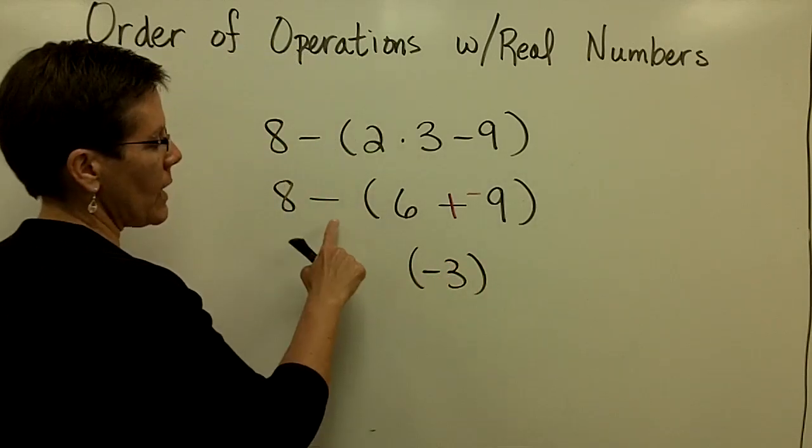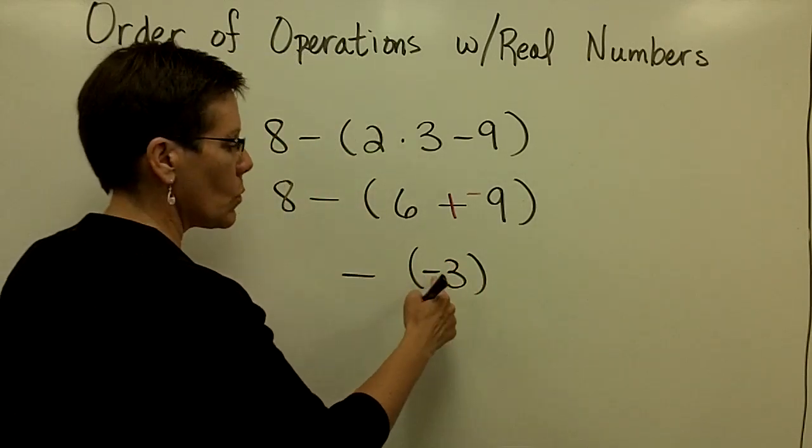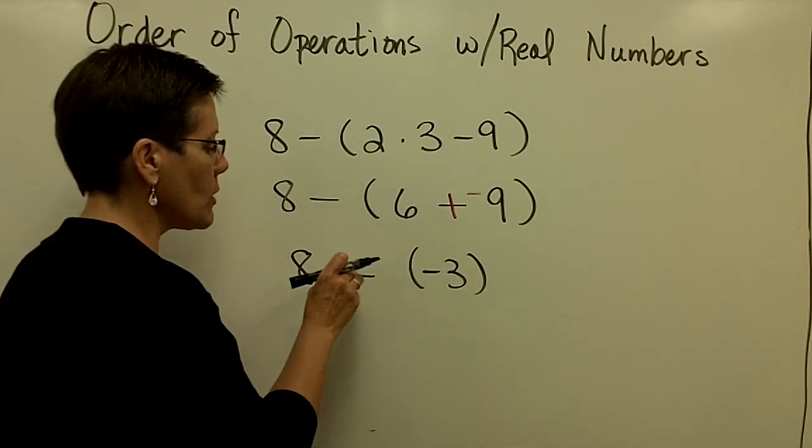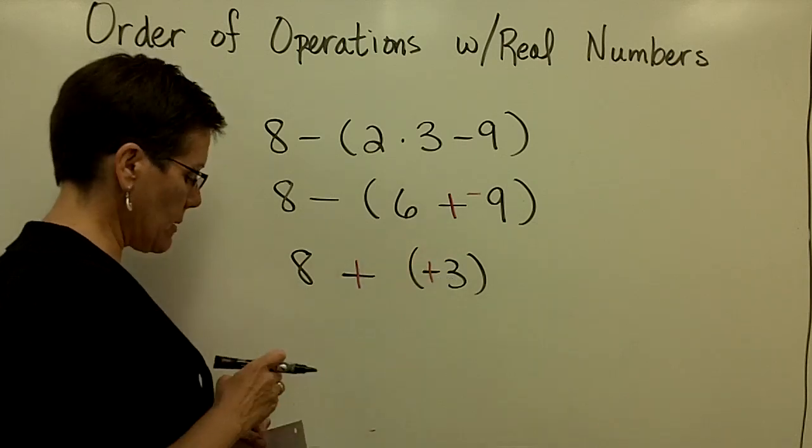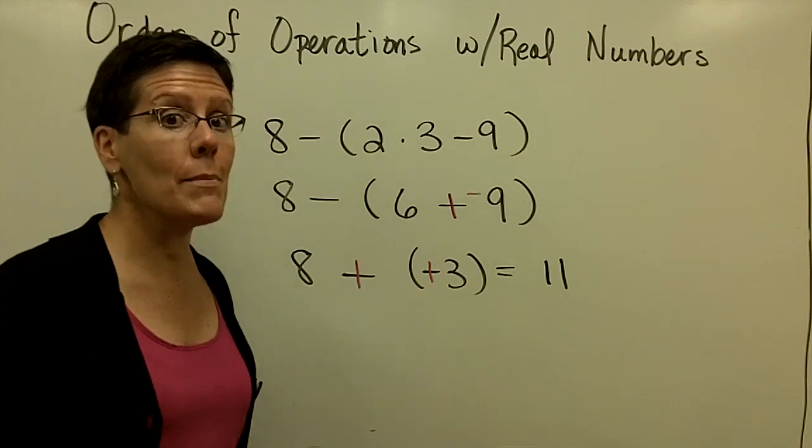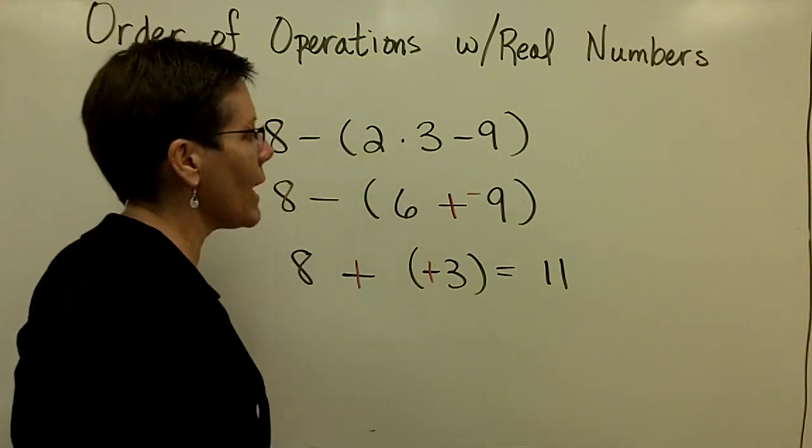I put parentheses around that because I want to subtract whatever's in that parentheses. And it's a little bit easier to look at. Subtracting a negative number means I add the opposite. And these have like signs, so I add their absolute values and I give them the common sign of both of those numbers, which is positive.